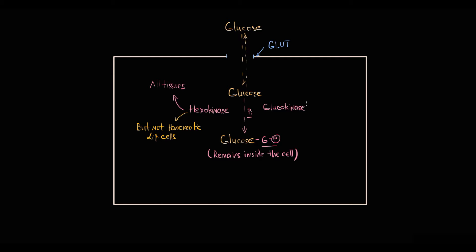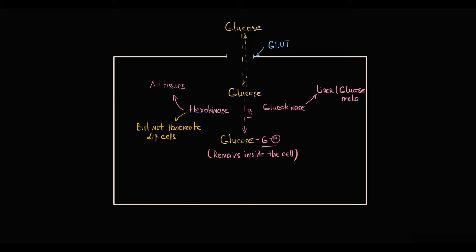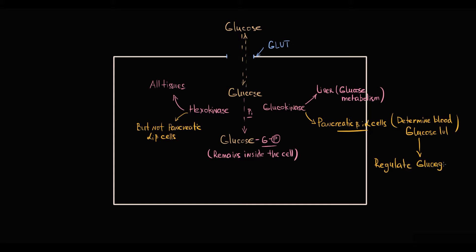Glucokinase is such an intricate enzyme that there are essentially two subtypes of it. In liver tissue, glucokinase participates in glucose metabolism. But in pancreatic beta and alpha cells, glucokinase helps those cells determine blood glucose level, so they can secrete glucagon and insulin proportionately to the glucose level in the blood. So despite the same biochemical function, these two subtypes of glucokinase are functionally different.